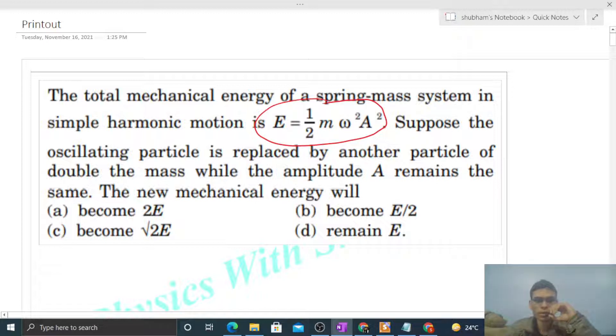So here we will double the mass - m becomes 2m - and amplitude stays the same. Then find the mechanical energy. What is omega for a spring-block system?